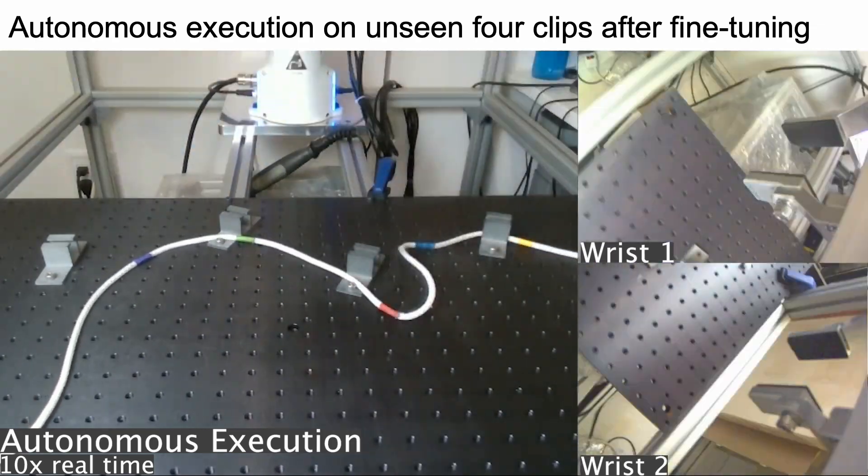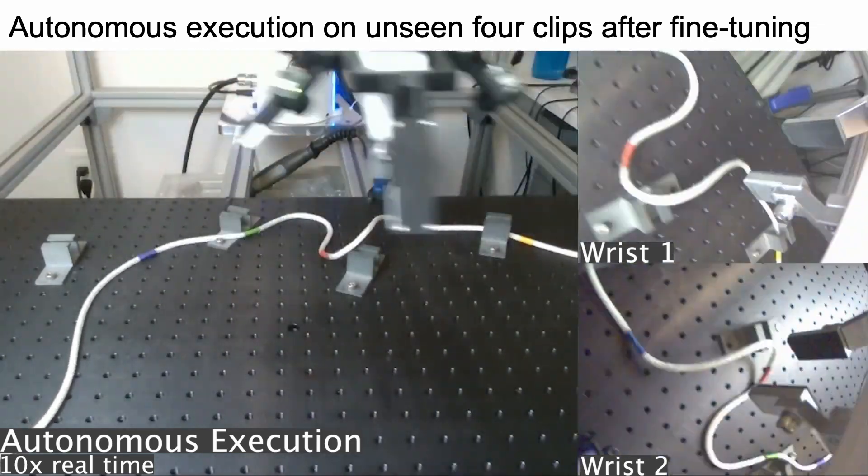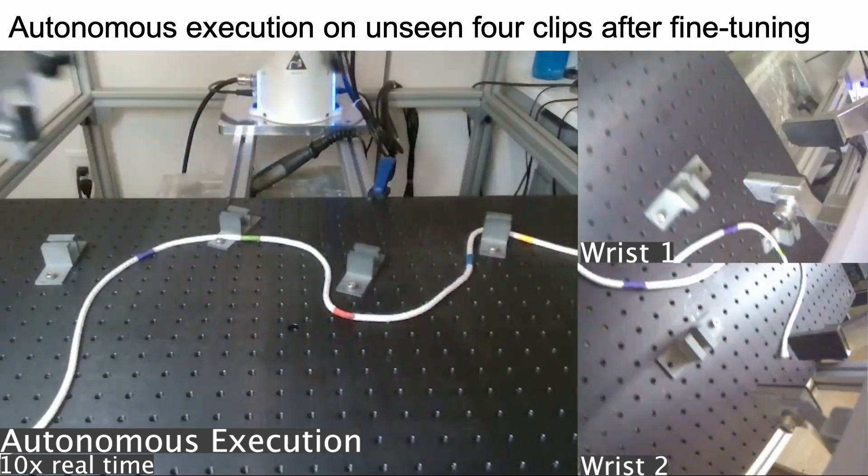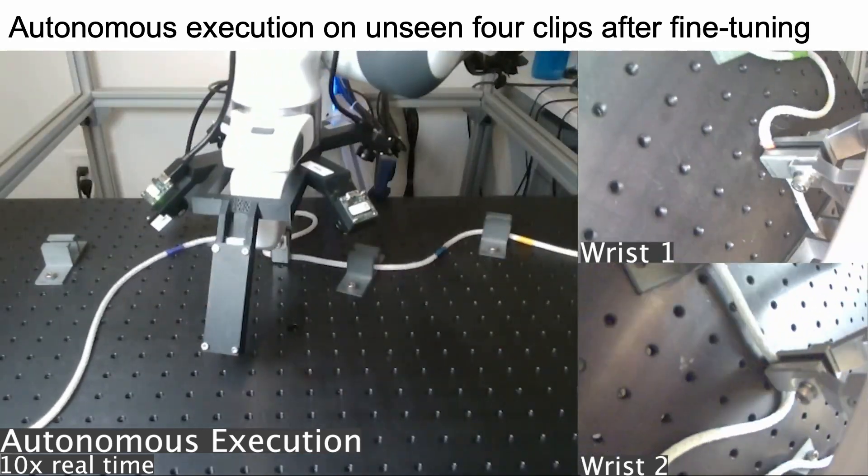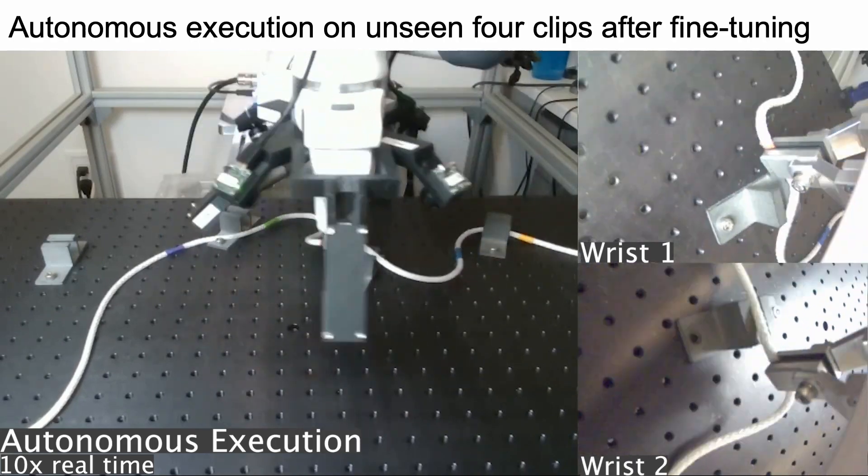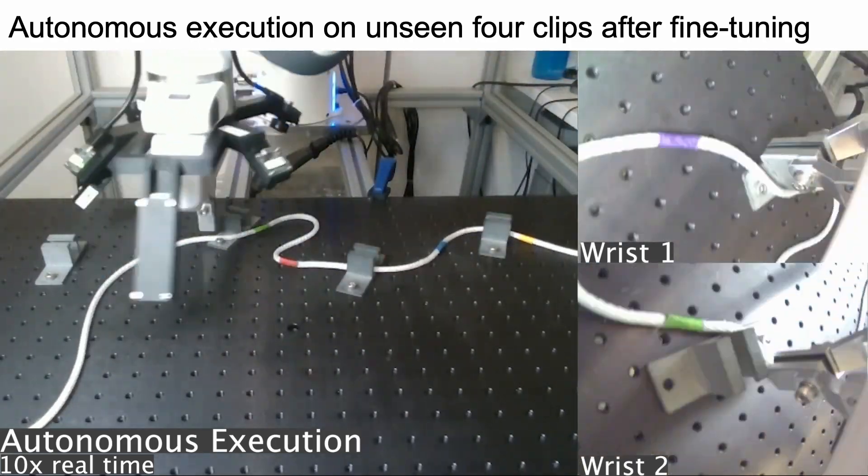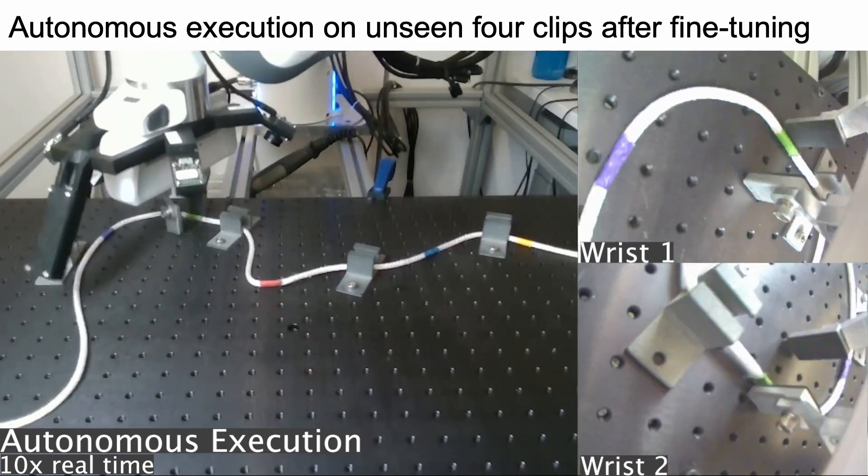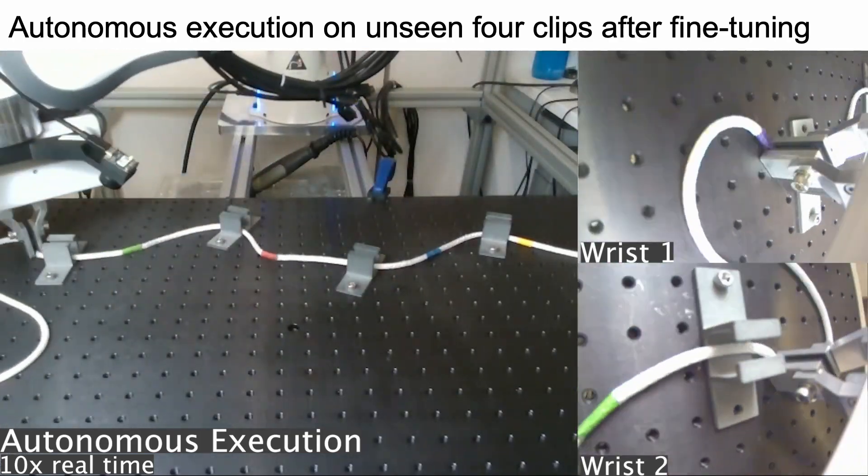Here is a video of the autonomous execution of our policy on unseen four-clip configurations after fine-tuning. The high-level policy selects the route primitive repeatedly when it is unsure if the cable has been routed successfully. It is also able to recover from failed pickups by using the perturb primitive on the cable.